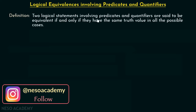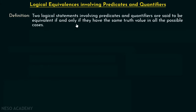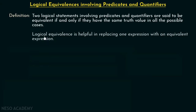Two logical statements involving predicates and quantifiers are said to be equivalent if and only if they have the same truth value in all possible cases. Logical equivalence is helpful in replacing one expression with an equivalent expression — that is the speciality of logical equivalence.